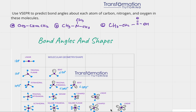Use VSEPR to predict bond angles about each atom of carbon, nitrogen, and oxygen in these molecules. In order to do that, the first thing we have to notice is that our nitrogen and oxygens here don't have lone pairs — actually, no lone pairs are shown anywhere on these molecules. So we have to fill in the missing lone pairs.